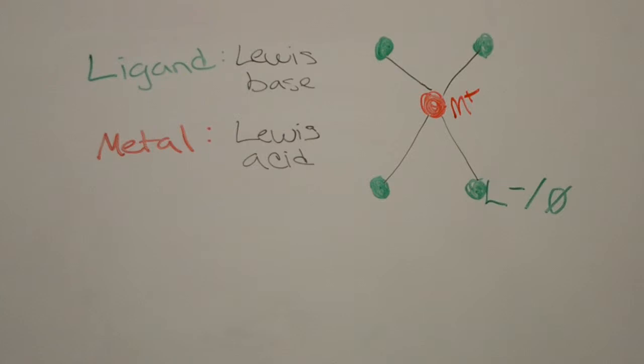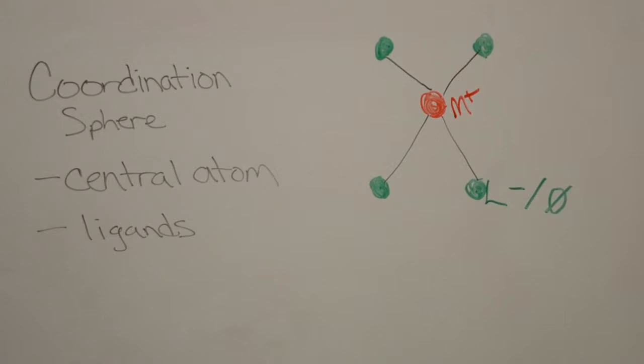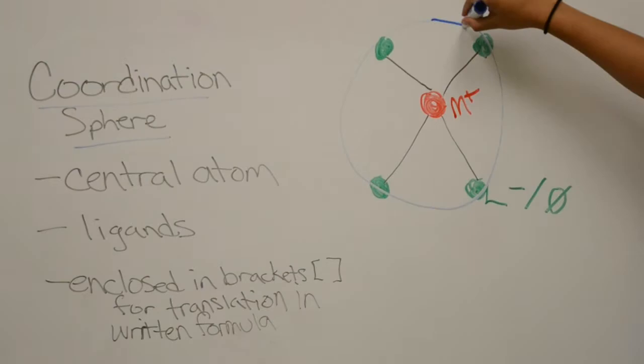The coordination sphere is made up of the central metal atom and the ligands. It is enclosed in brackets for translation in the written formula.